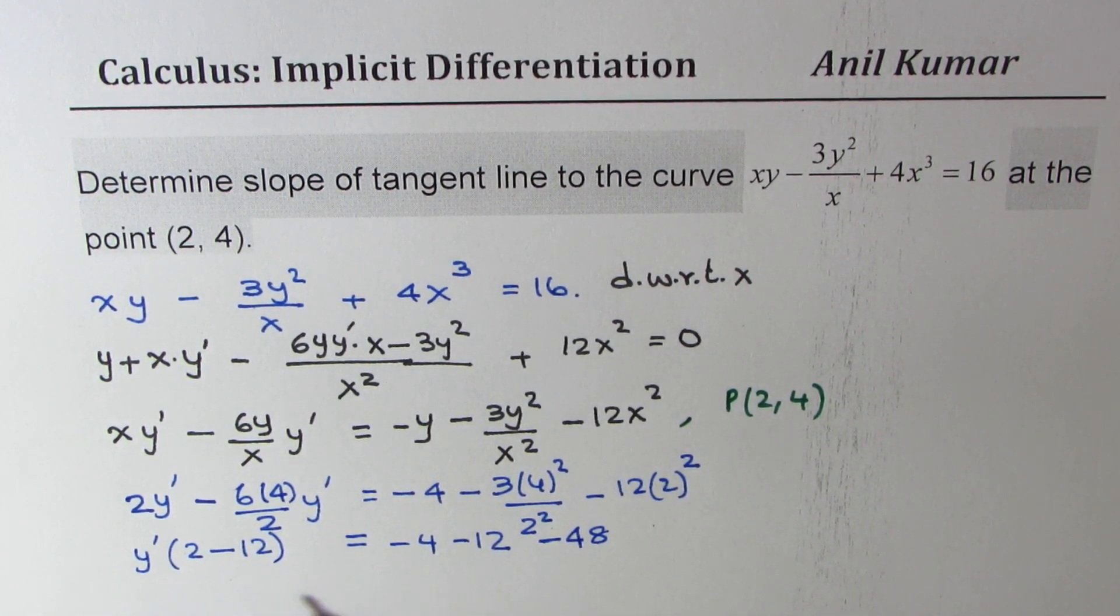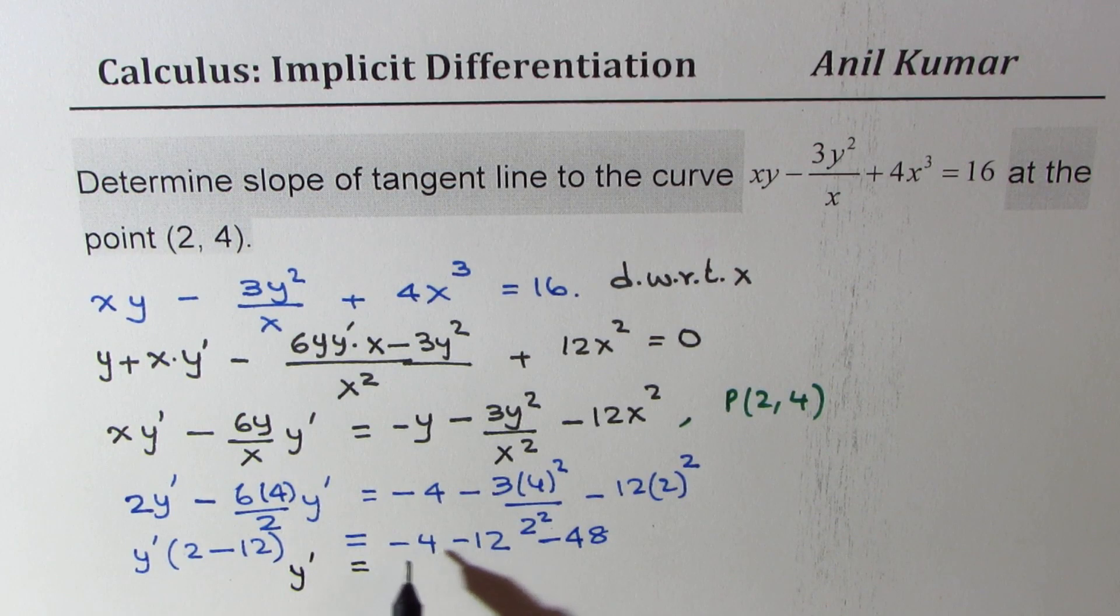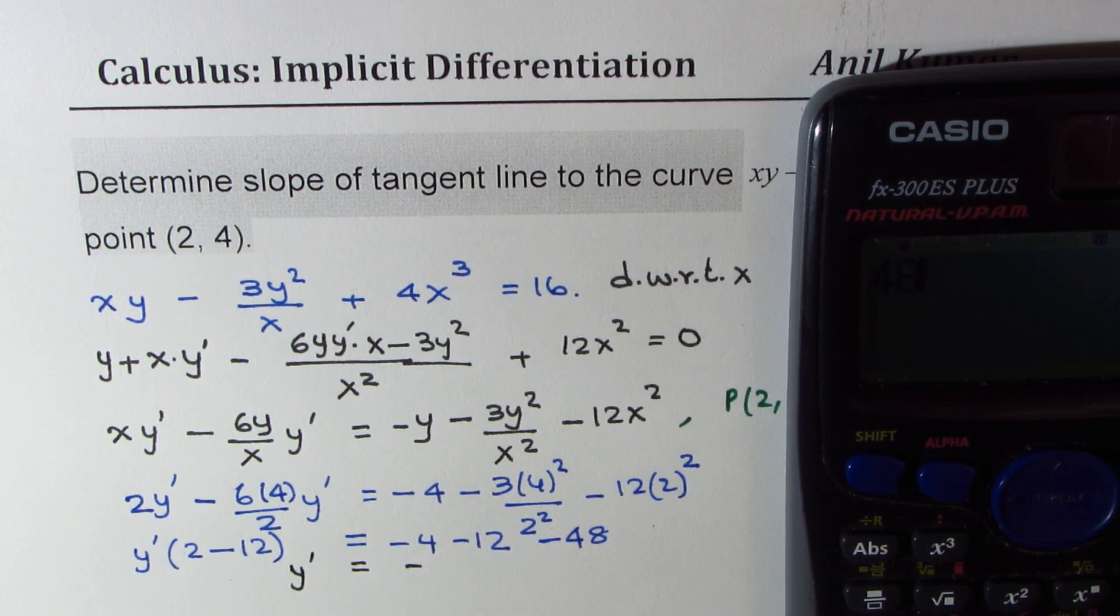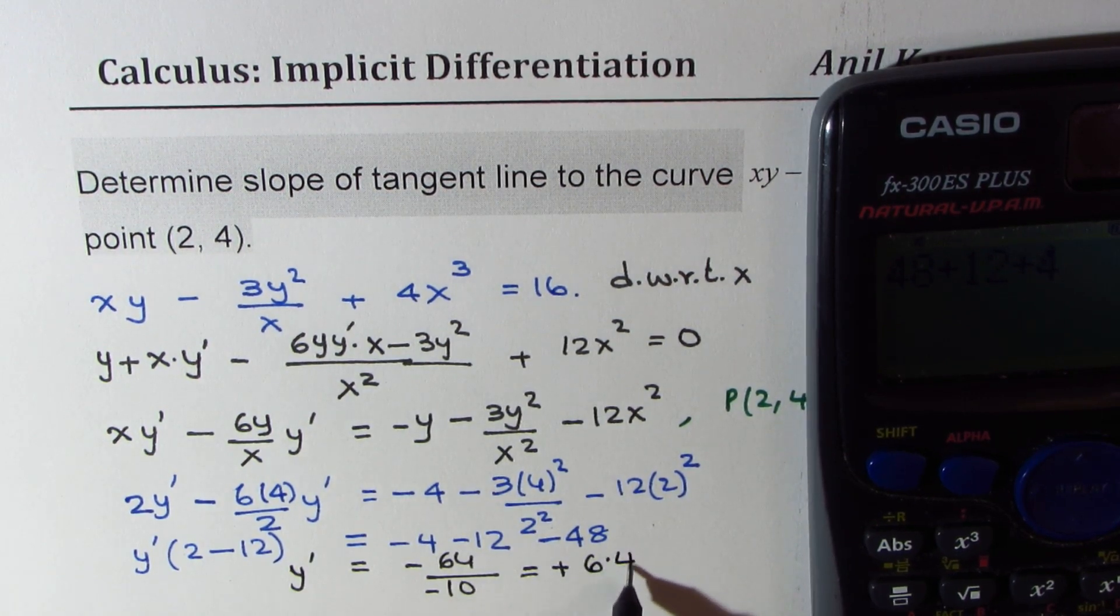So now we can rearrange. This is minus 10, so what we get from here is y dash equals 2. We can add all these terms which are negative. Let us use the calculator to finish it off. So we have 48 plus 12 plus 4, which is equal to 64 divided by 10, which is also negative 10. So we get positive 6.4 as our answer.